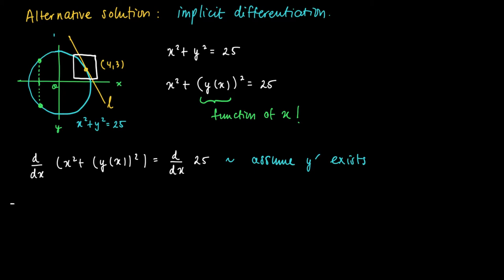This is under the assumption that y prime exists, the derivative of y. So we get 2x as the derivative of x squared, plus an application of the product rule on yx times yx.